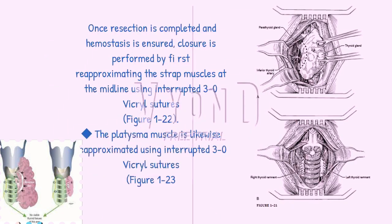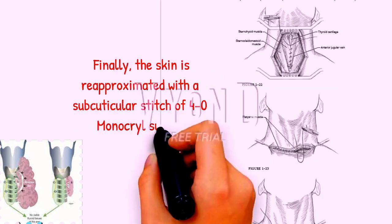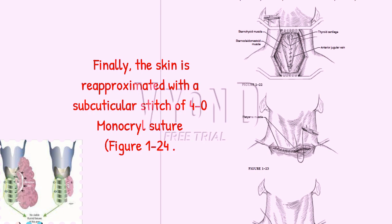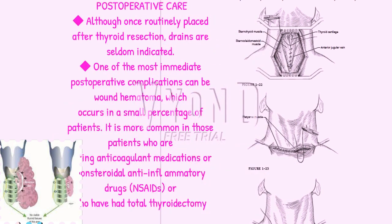Once resection is completed and hemostasis is ensured, closure is performed by first re-approximating the strap muscles at the midline using interrupted 3-0 Vicryl sutures, figure 1-22. The platysma muscle is likewise re-approximated using interrupted 3-0 Vicryl sutures, figure 1-23. Finally, the skin is re-approximated with a subcuticular stitch of 4-0 Monocryl suture, figure 1-24.